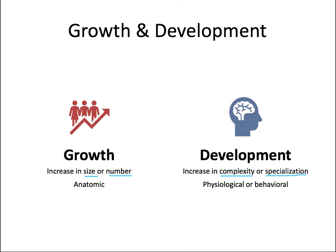Growth and development follow three basic laws. There's a pattern — predictable changes in how a body will grow over time. There's general timing — ages where we expect growth and ages where we don't. But there is also some variability in how an individual person will grow and develop. So there's a pattern, timing, and variability.